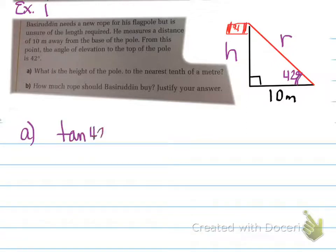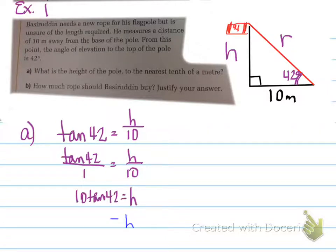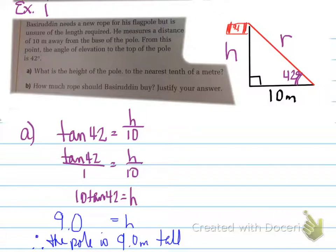So part A, we find out that tan 42 is equal to H over 10. We need H, so tan 42 is opposite over adjacent. Tan 42 is equal to H over 10. Set tan 42 over 1, folks. The rationale is when you set it over 1, you have a fraction equal to a fraction. And it makes sense for some of you that then you can cross-multiply. Once you cross-multiply, you find out that H is equal to 9.0. 9.0 what? Meters. That's what the definition is saying. So the flagpole is 9.0 meters.